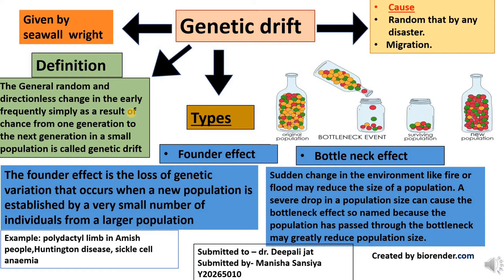The main point about genetic drift is that it is a random process. That means no pre-deciding factor is going to work behind the genetic drift because it is going to occur by chance. Unlike the process of natural selection, it is not at all a random process. So genetic drift is a random and directionless effect.